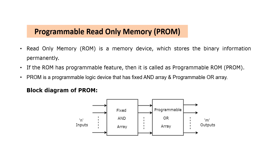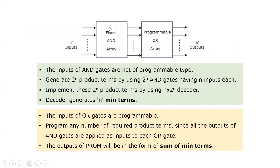This is the block diagram of the PROM. In this you can see the first block indicates the fixed AND array, and here it is the programmable OR array. For this fixed AND array, we can apply n number of inputs, and from the programmable OR array we can get m number of outputs. When you see this block diagram, the inputs of AND gates are not programmable type. That means with this fixed AND array, we can generate 2^n product terms. To generate these 2^n product terms, we have to use the n by 2^n decoder. Since we are using the fixed AND array, each output of the AND array indicates the minterm.